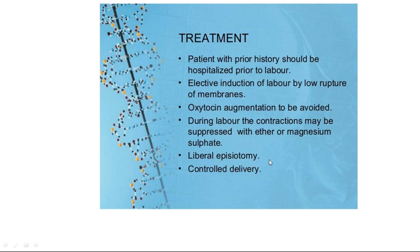Liberal episiotomy should be given to prevent lacerations, and a very controlled delivery of the baby must be done. This can only be prevented if you have a previous history; otherwise it is difficult to prevent. If you have a previous history, do not allow the woman to ambulate — keep her in bed, and do not give oxytocin or prostaglandins. If contractions are too vigorous, you can use magnesium sulfate or terbutaline.